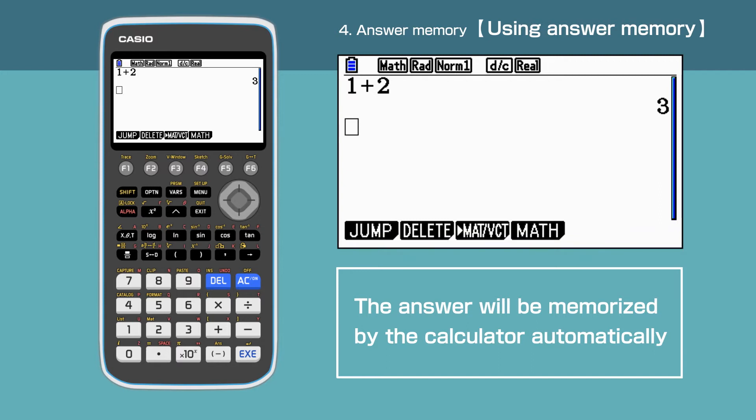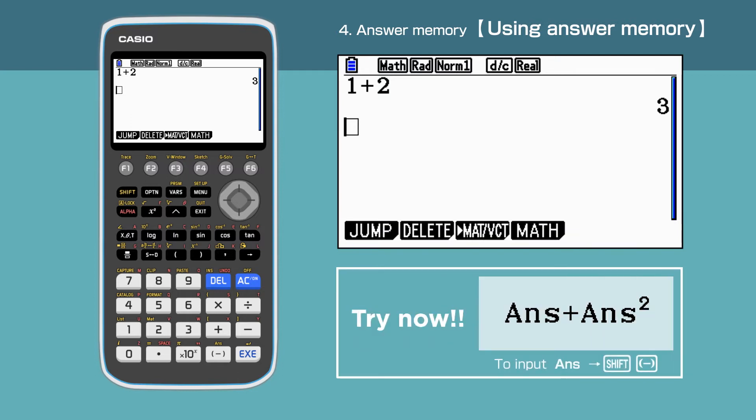Now we are going to use the Answer Memory function to calculate further. For instance, we are going to work out Answer plus Answer squared. Press Shift, then bracket minus to access the answer. To select the answer in yellow above the bracket minus key, we will have to first enter Shift.